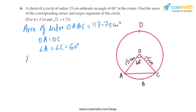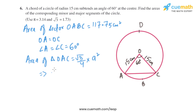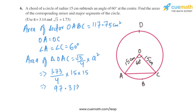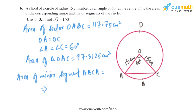The formula for the area of an equilateral triangle is √3/4 × a², where a is the side length. With √3 = 1.73, we get 1.73/4 × 15 × 15, and on solving this we get the area of triangle OAC as 97.3125 square centimeters.